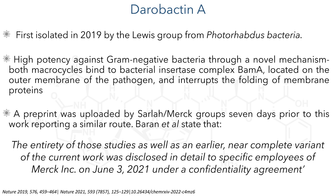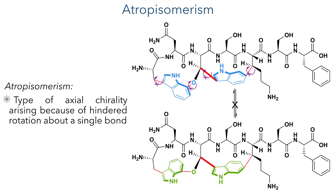This macrocyclisation is a key challenge in constructing this molecule as it exhibits a property known as atropisomerism. This is a type of axial chirality that arises because of hindered rotation about a single bond. In Darobactin A, this occurs at the indole groups which are unable to rotate due to the conformationally constrained macrocycles, and therefore can exist as isomers where the nitrogen atom points either up or down. Controlling this isomerism is a significant challenge as once the macrocycle is formed, the conformation is locked in place and cannot be interconverted.